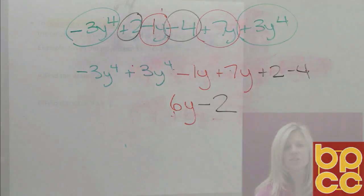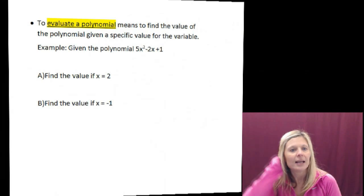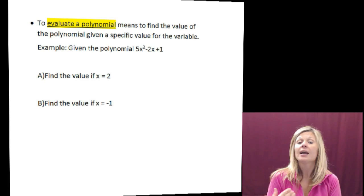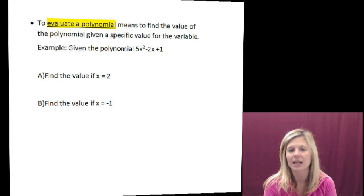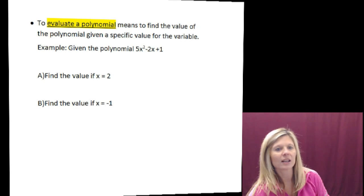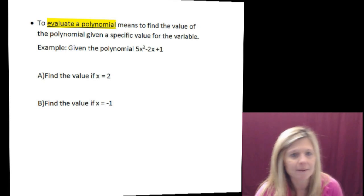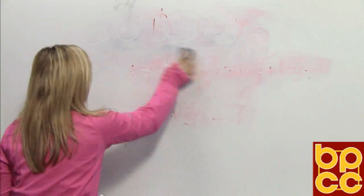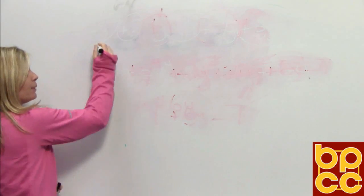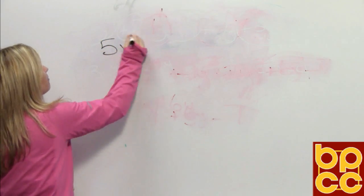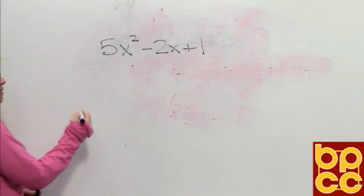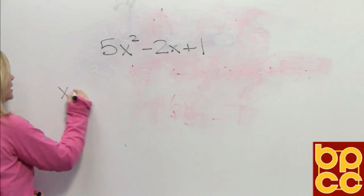Our last definition is evaluating. Evaluate means two things always: substitute and calculate. In my class we say it's easy to evaluate — just substitute and calculate. Let's work the last example on the board. I'm giving you a trinomial — trinomial means three parts. So I'm giving you 5x squared minus 2x plus 1, and it says find the value if x equals negative 1.